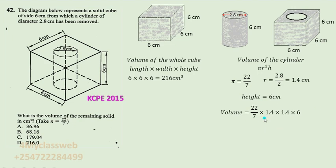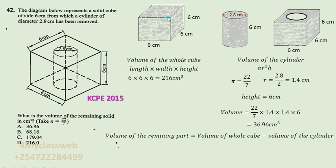So after you simplify it, you are supposed to get the volume of the cylinder to be 36.96 cm cube. And as I have said, to get now the volume of the part that was left, you should now take the volume of the whole of that cube, then we subtract the volume of the cylinder. The whole of this cube, we subtract this mass that was extracted.